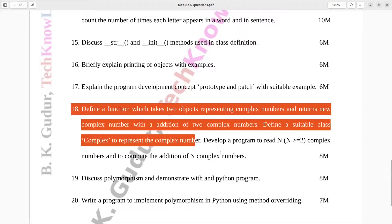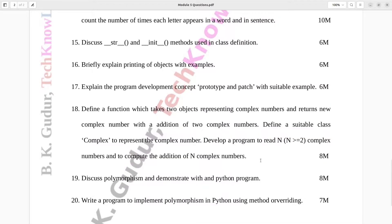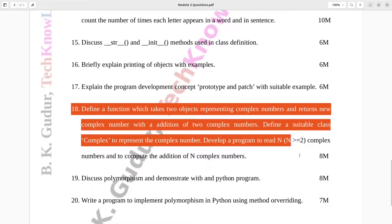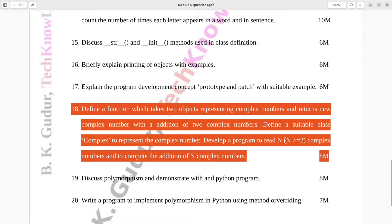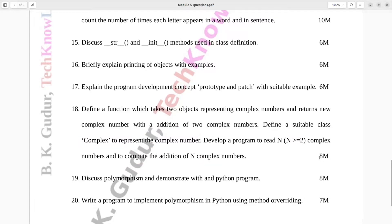Question number eighteen. Define a function which takes two objects representing complex numbers and returns new complex number with an addition of two complex numbers. Define a suitable class called complex to represent the complex number. Develop a program to read n greater than or equal to two complex numbers and to compute the addition of n complex numbers. Eight marks.